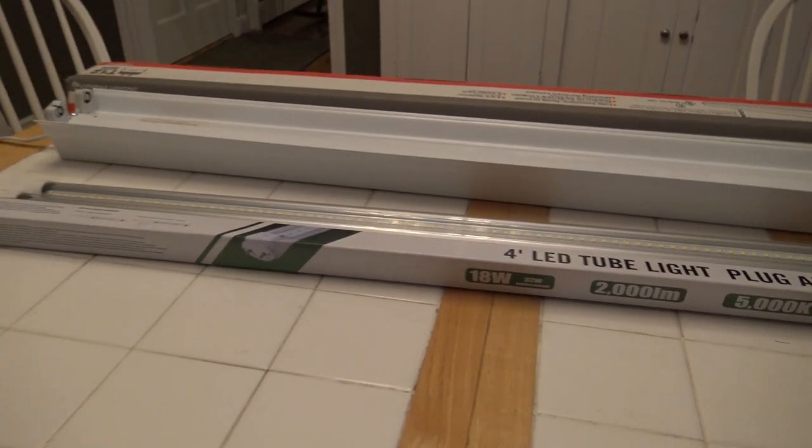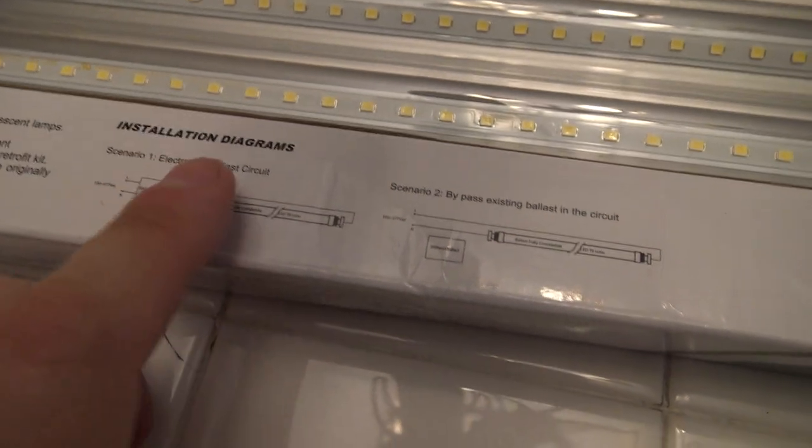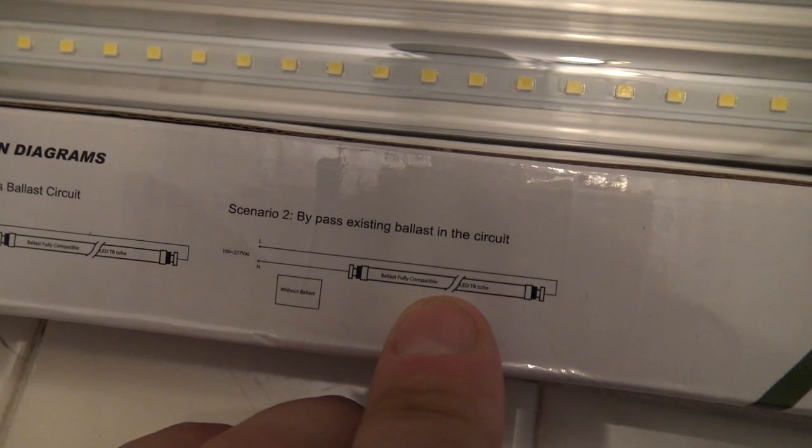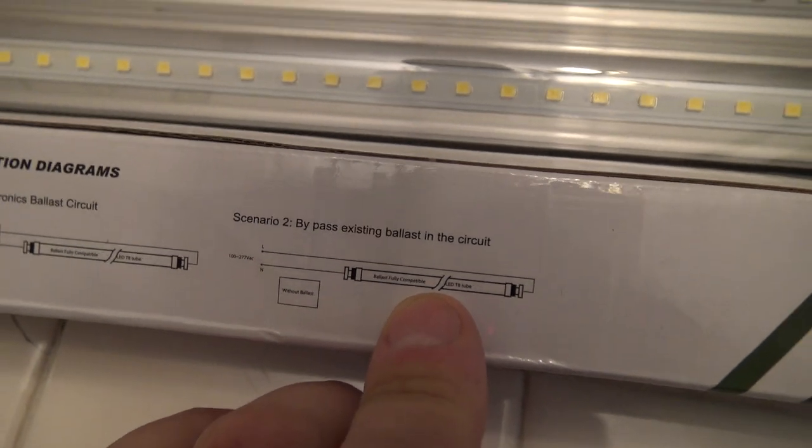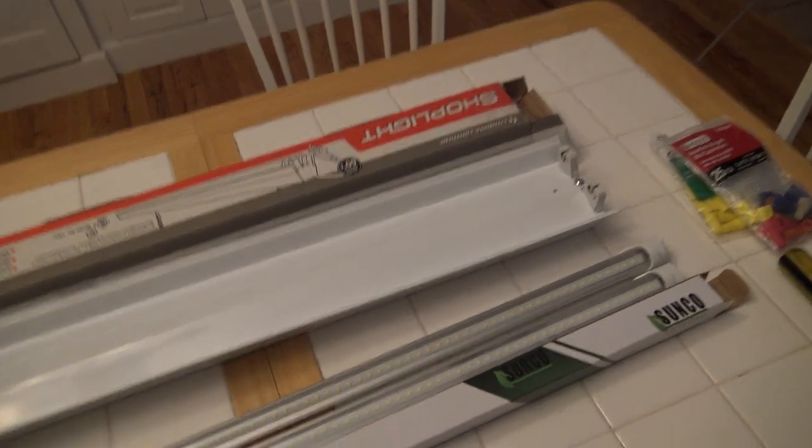All right, now let's get into the actual project itself. So as I said, I have some Sunco bulbs. I'll leave a link in the description below, so you can go check those out. Here's the installation diagram. As you can see, it says that you can use it with a ballast, but I'm not going to do that. I'm going to take the ballast completely out, and I'm going to use scenario two here, which is bypassing the ballast. And this is a double-sided bulb, which means I need power on both ends and not just on one end.